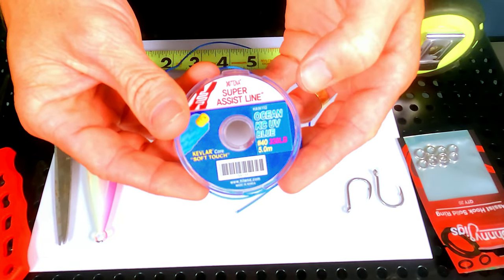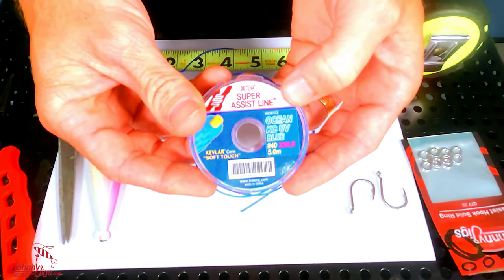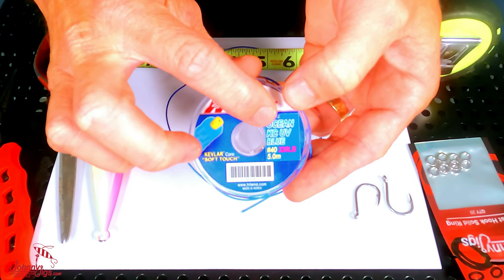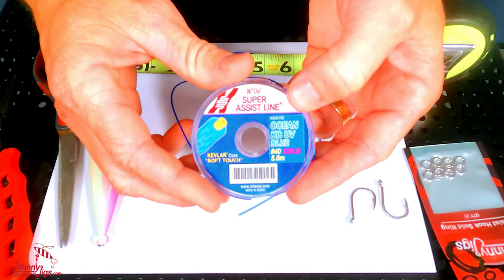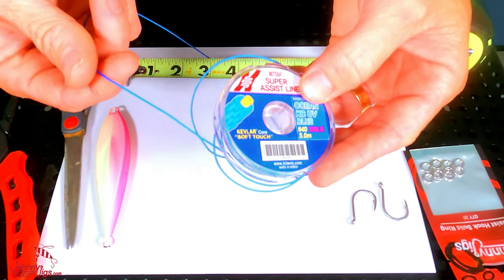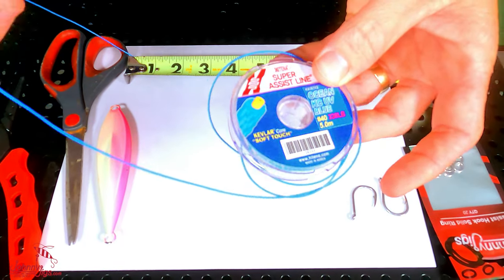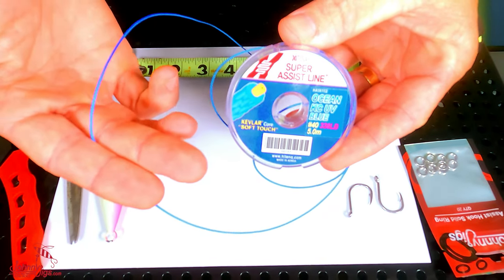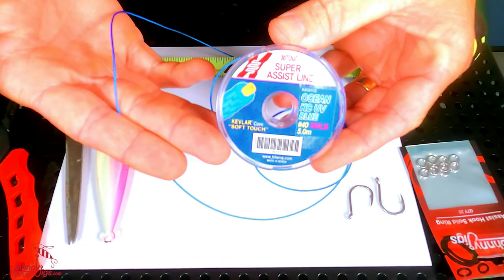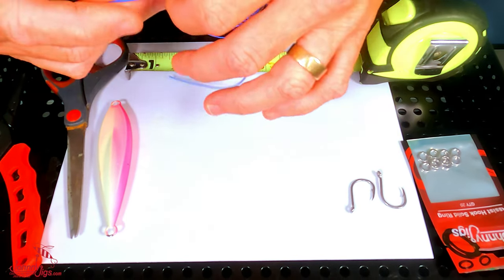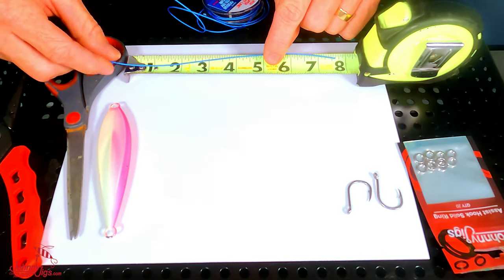Alright guys, so we're gonna start out. I'm using the Hytina Kevlar Core, that's what the KC stands for there, 320 pound test. This is the blue one. They have it in orange and a few other colors, but we usually carry the blue and the orange here at Johnny Jigs.